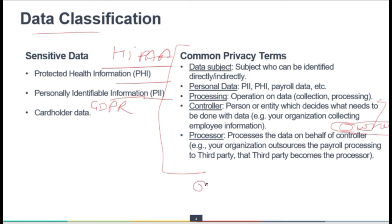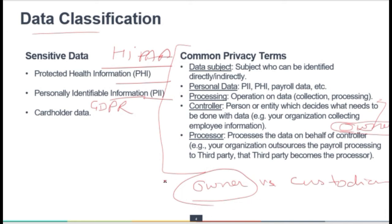The data owner versus the custodian: the owner always defines the security policies and needs to comply with different regulations, while the custodian needs to implement those security policies — applying controls, taking backup, and checking for restoration of that data. This is how we can differentiate both roles.